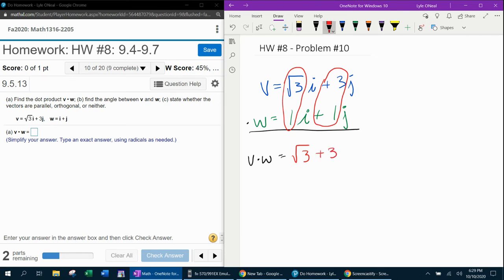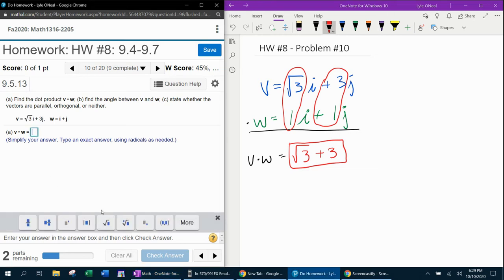Then those numbers get added. Since you cannot simplify √3 plus 3, and we want to leave this exact, we're going to stop there. That's the exact answer in simplest radical form. When you put that into MyLabMath, remember to move out from under the square root when you add the plus 3.